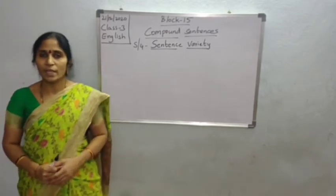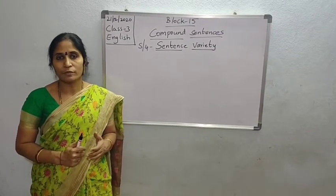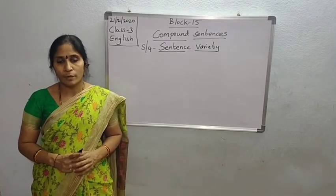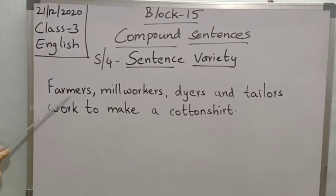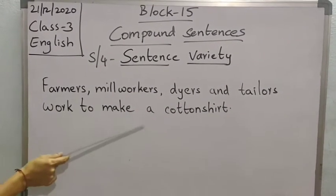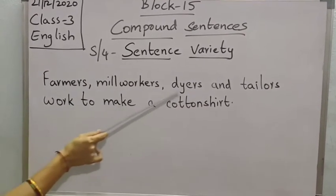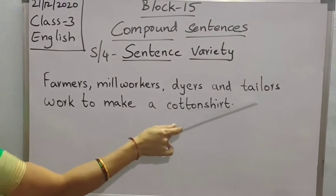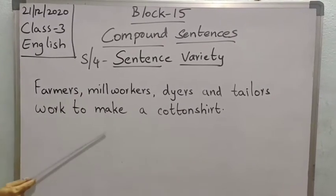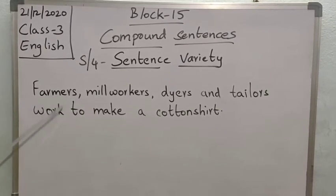In the previous class we learnt the process for making cotton. Now I will put the names of the people who all work for making cotton. Farmers, mill workers, dyers and tailors work to make a cotton shirt. If you observe this sentence, it is a sentence with compound subjects and it is also a topic sentence.